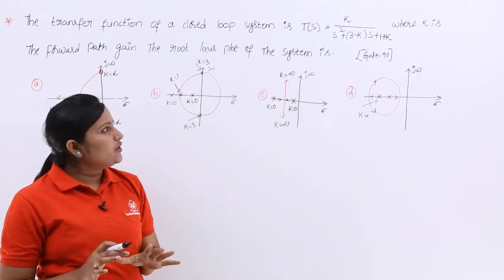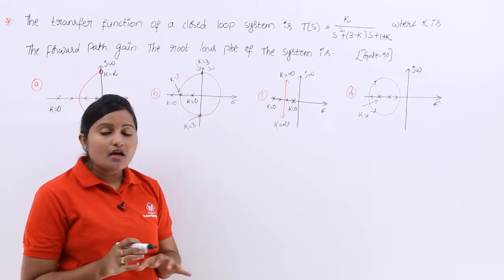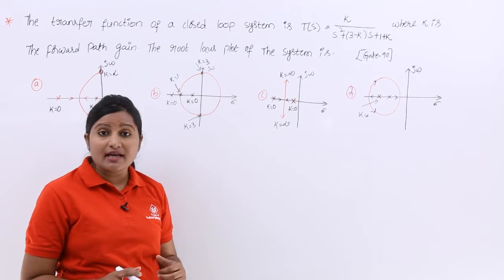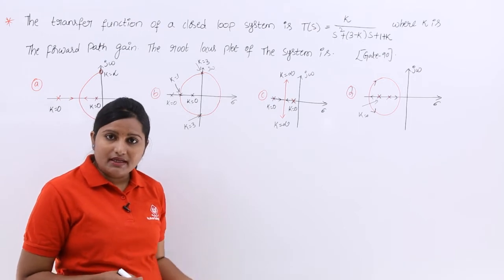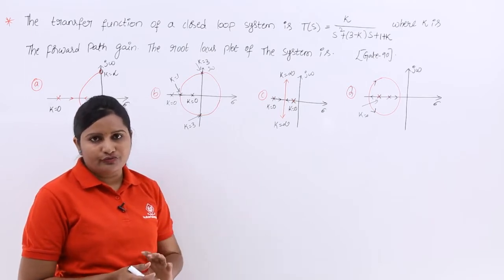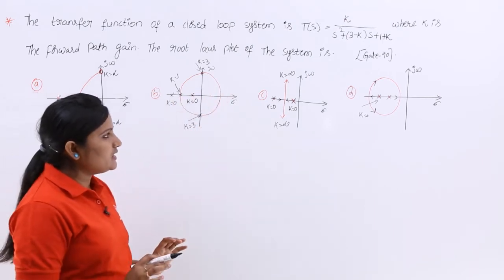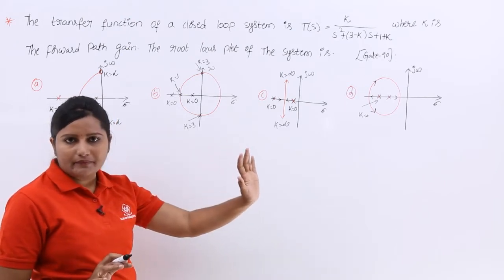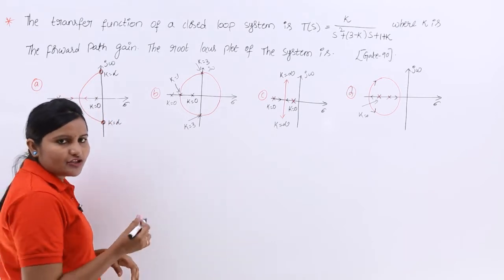When given this type of question, you should use the inspection method, because drawing the full root locus diagram takes 15–20 minutes — too long for Gate-type technical exams. So inspection methods are very important. A common point across all diagrams is K=0, so we substitute K=0 first into the characteristic equation of the transfer function.